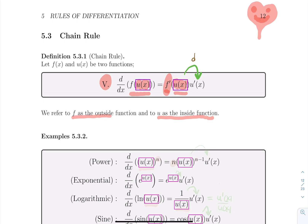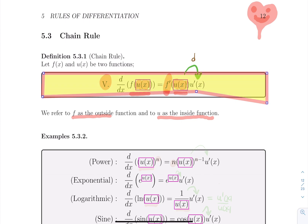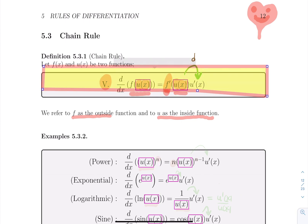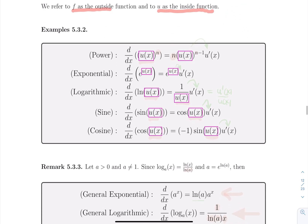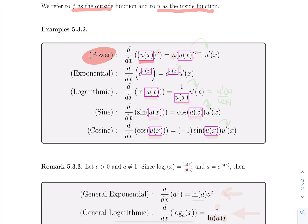I'll give you specific examples of how to use the chain rule for functions we've already learned. For a function of the form something to the power n, you use the regular power rule: the n becomes the coefficient in front, the inside stays in the box unchanged, the new power is the former power minus one, and then you multiply by the inside derivative. The u prime always comes after in all those formulas.